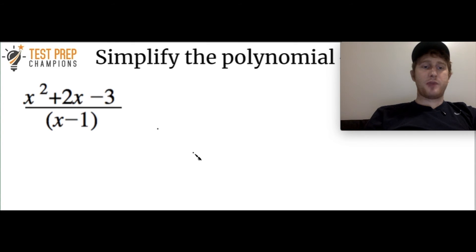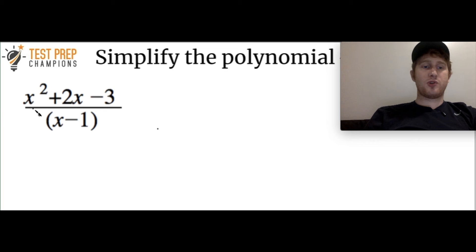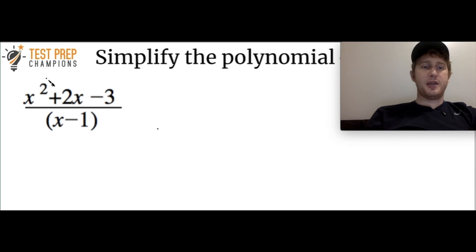The next type of problem is a little bit trickier. The question is x squared plus 2x minus 3 divided by x minus 1. Go ahead, pause the video, try this out, and then we'll go over it. The first thing to see is that the numerator — the top part of the fraction — is a quadratic equation. So before we can move ahead with the problem, we're going to have to take x squared plus 2x minus 3 and factor it.